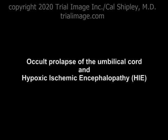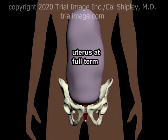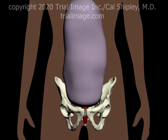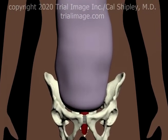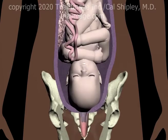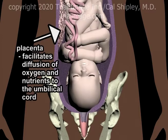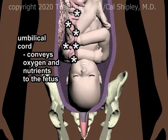Let's turn now to occult prolapse of the umbilical cord and hypoxic ischemic encephalopathy. Here we have a fetus at full term. The placenta facilitates the diffusion of oxygen and nutrients from the maternal bloodstream to the umbilical cord. The umbilical cord acts as a conduit for the transfer of oxygen and nutrients from the placenta to the fetal bloodstream.